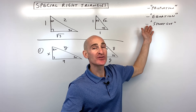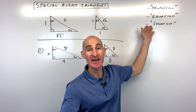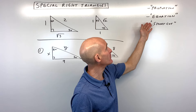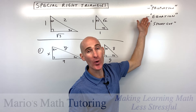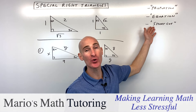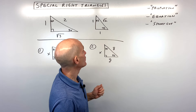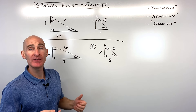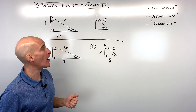You're going to learn three methods for solving these special right triangles, 30-60-90 and 45-45-90. First, we're going to do the proportion method, then the equation method, and then a shortcut method. They're all good methods — just use the one you feel most comfortable with, and in time you can learn the other ones as well.